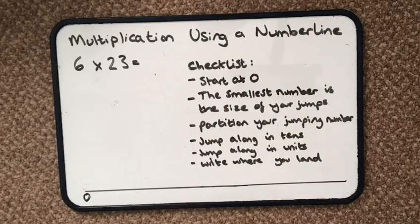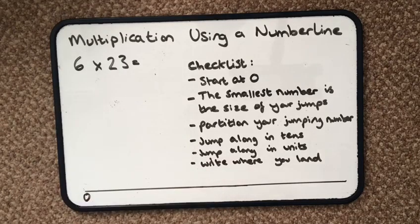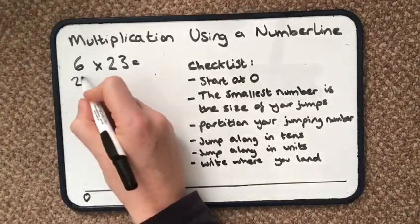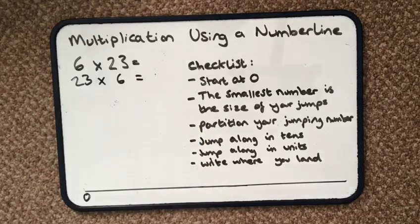So we're looking at multiplication using a number line. This time I have a two-digit number multiplied by a one-digit number, and with multiplication it doesn't matter which way round this is - it could say 23 times 6 or 6 times 23, it's both the same.